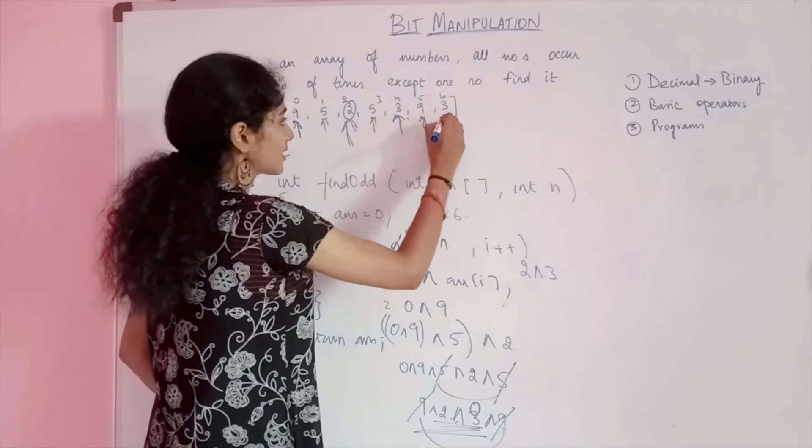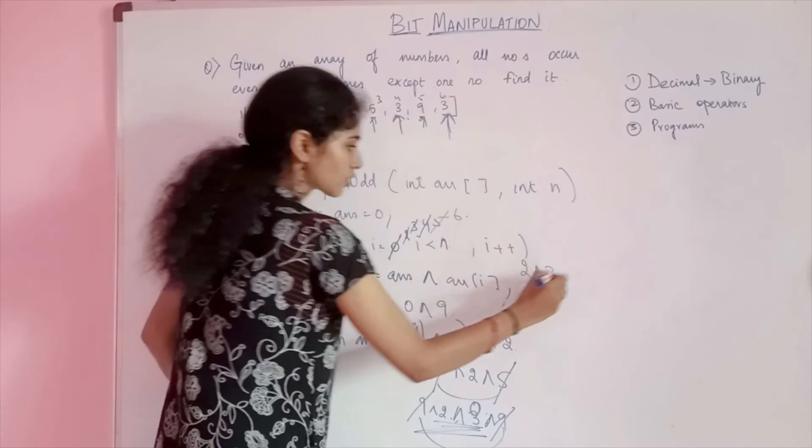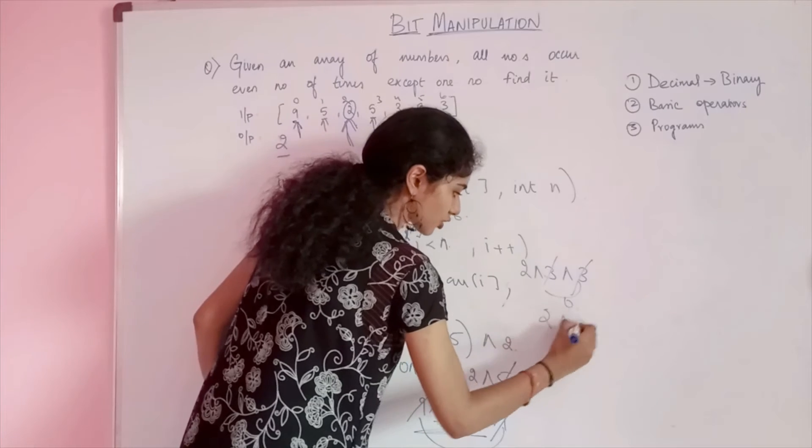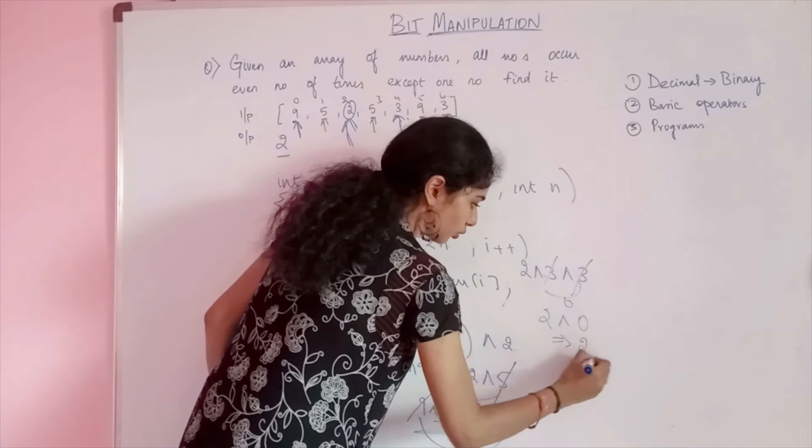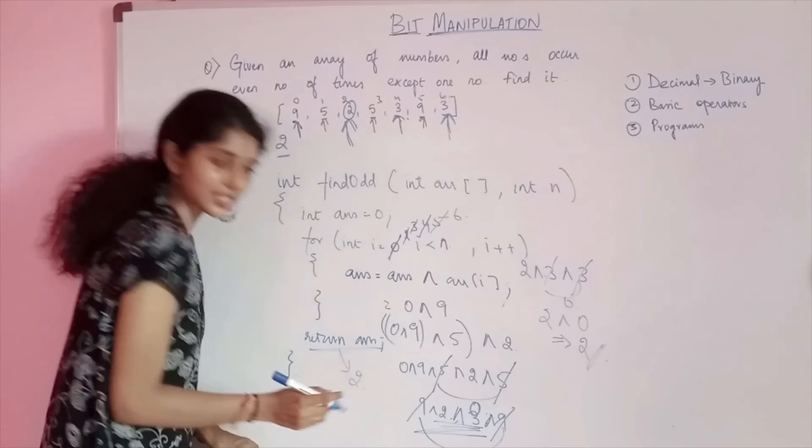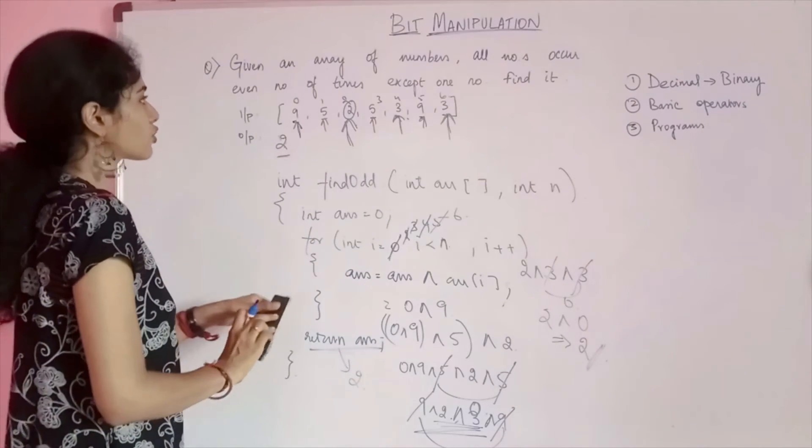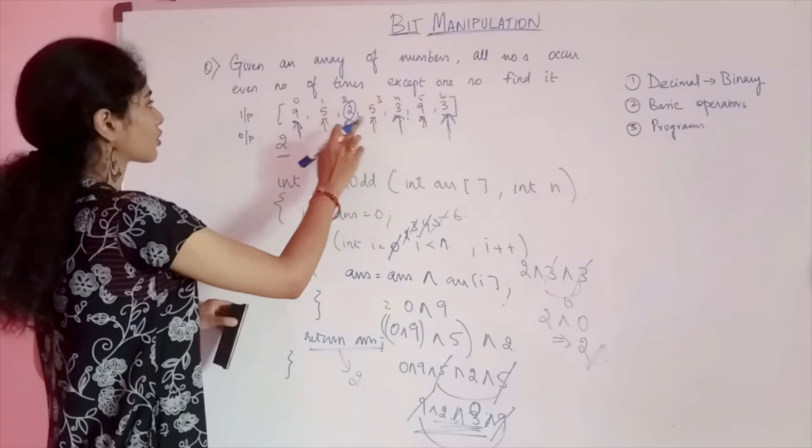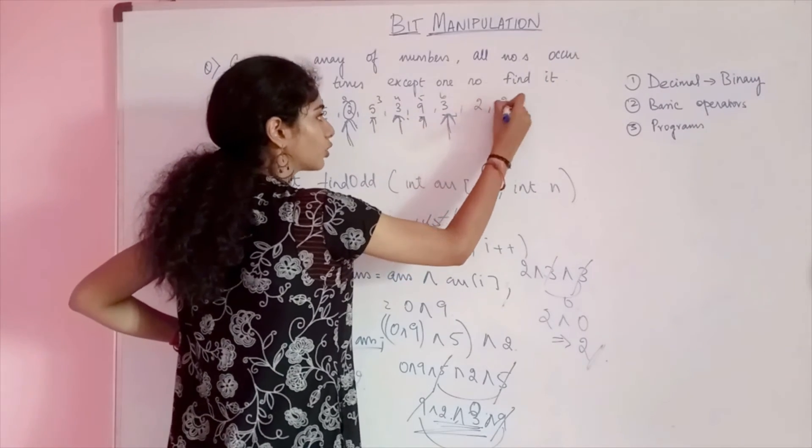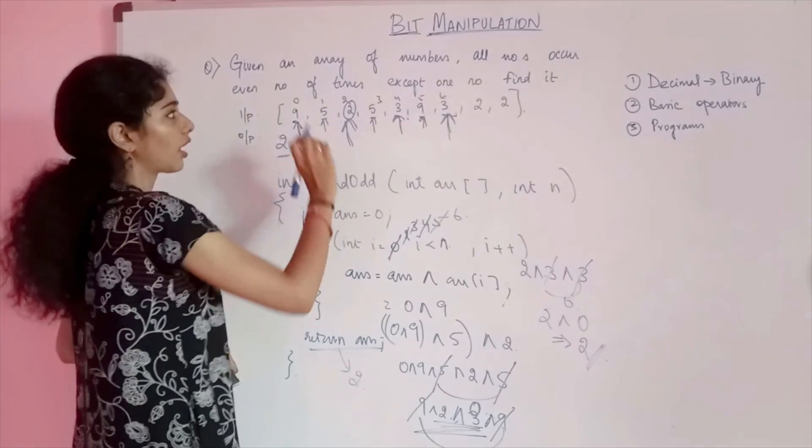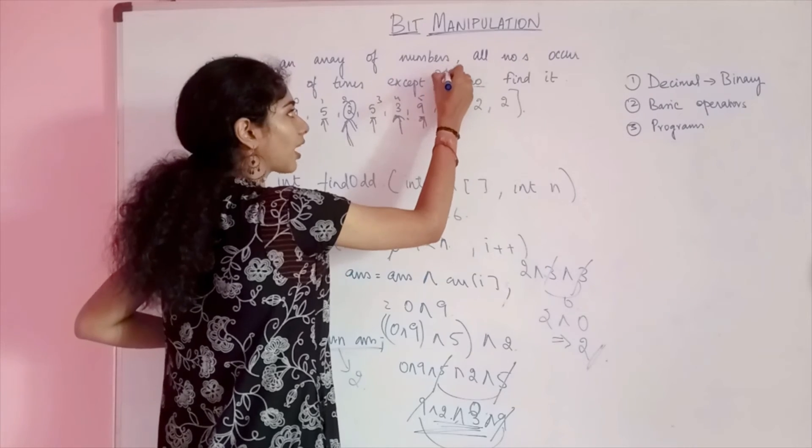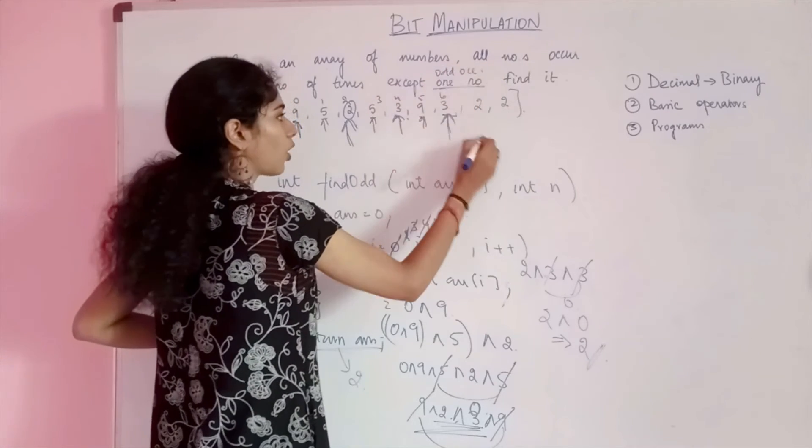Now i will become 6. We have 3 here. On XOR, 3 and 3 will be 0. 2 XORed with 0 will be 2. What will get returned? A return will be 2, which is the desired answer. This question is same as occurring odd number of times.